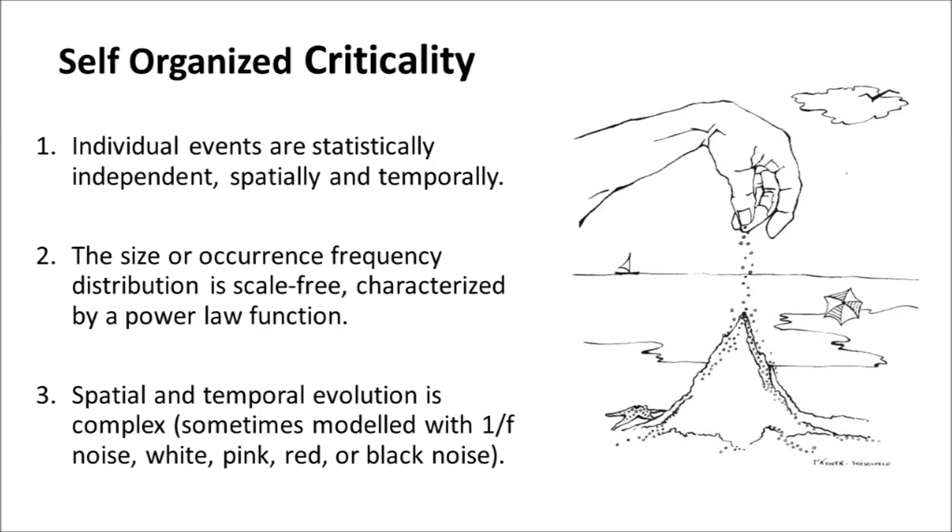Self-organized criticality characterizes the behavior of dissipative systems that contain a large number of elements interacting over a short range. The systems evolve to a critical state in which a minor event starts a chain reaction that can affect any number of elements in the system.